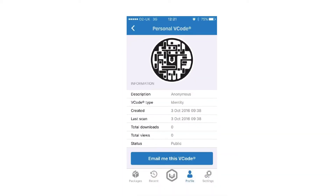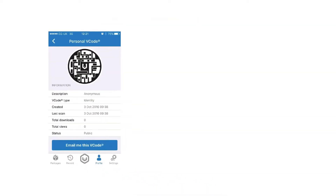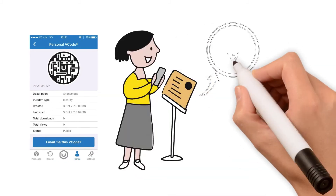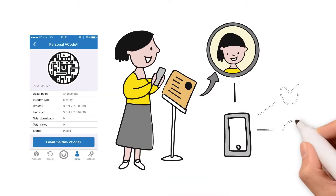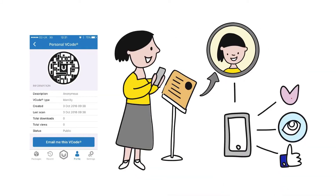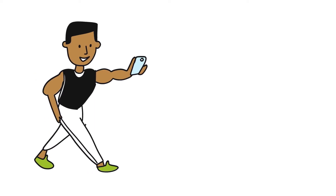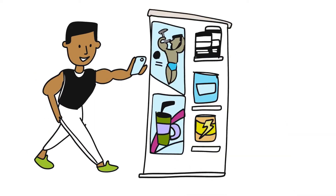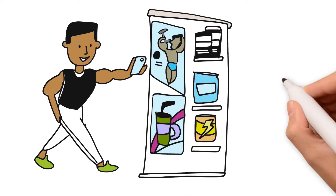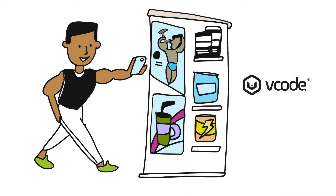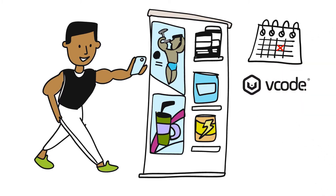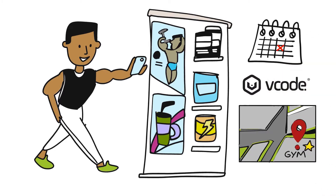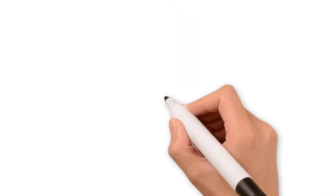When a Vcode is scanned, it links the user to a user-specific content package inside the app. What content they will get will depend on who they are, what Vcode they scan, when they scan it, and where they scan it.